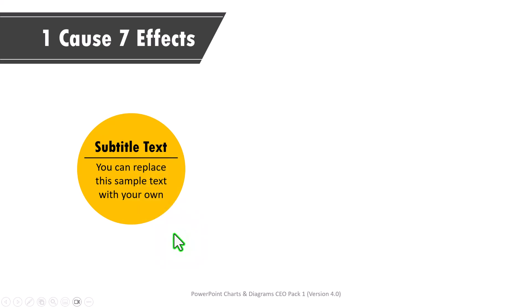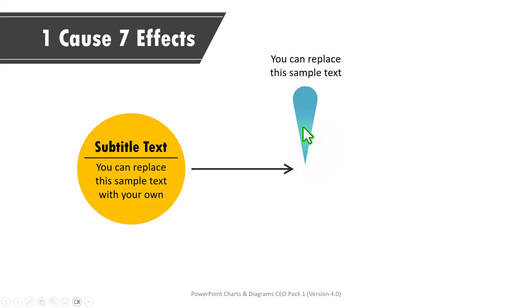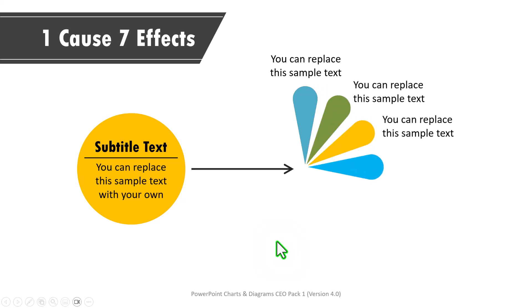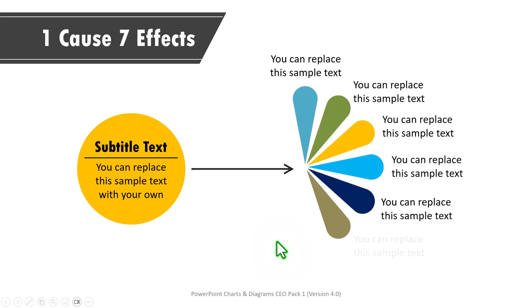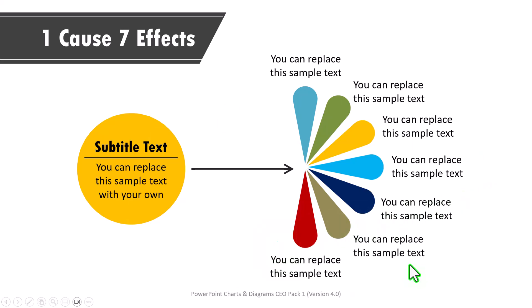This template shows one cause and seven effects. First we show the cause, then on each click we reveal the first effect, second effect, third, fourth, fifth, sixth, and the final one. These animations take a lot of time and skill to build.